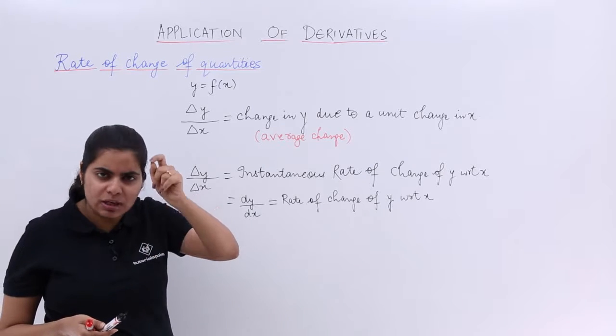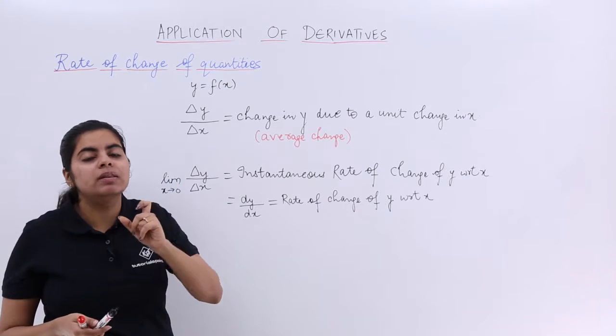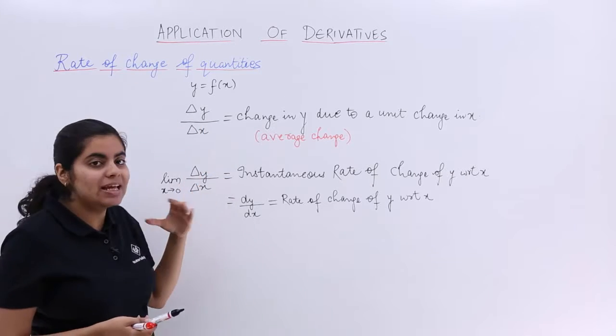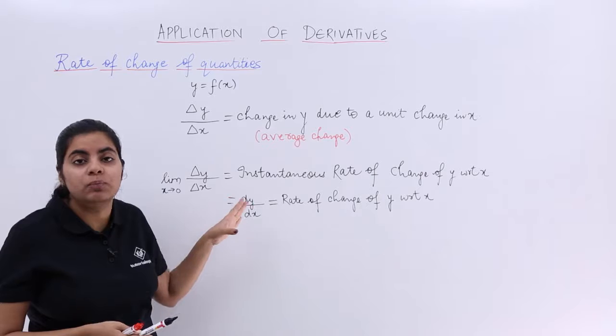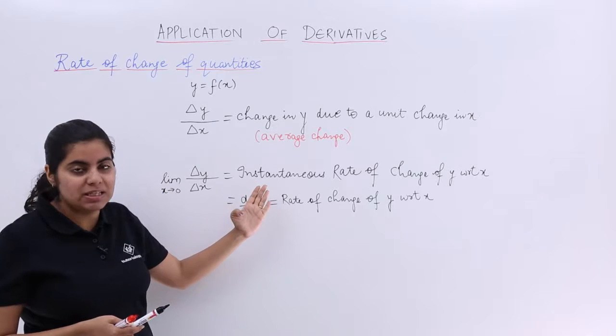But if you want to talk about a very particular instance, then what to do? Then you write del y upon del x with the limit x tends to 0. That means the limiting value. And that is known as the instantaneous change.